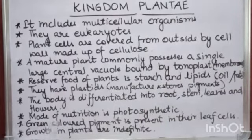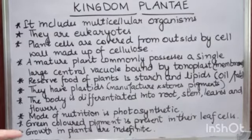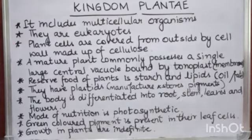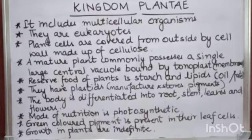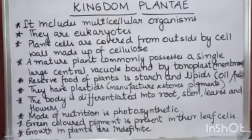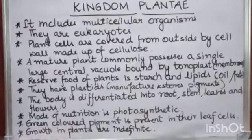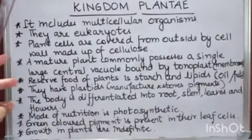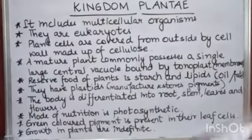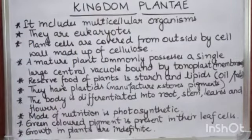Green-colored pigment is present in the leaf cells of plants. Growth in plants is indefinite — some plants are very small, some are a little tall, and some are very tall, so their growth is not definite. Different plants have different types of growth. These are the characteristic features of Kingdom Plantae.